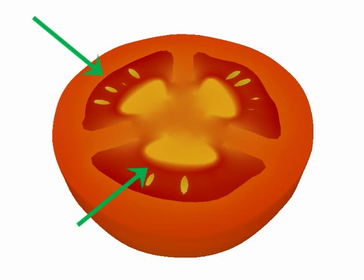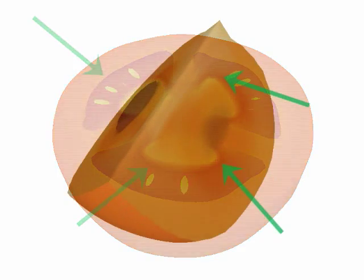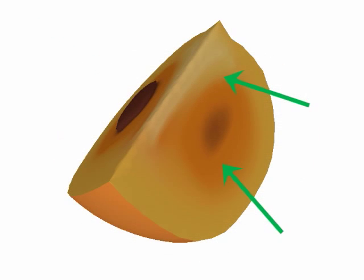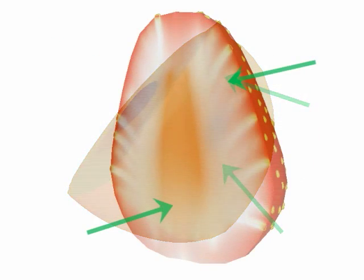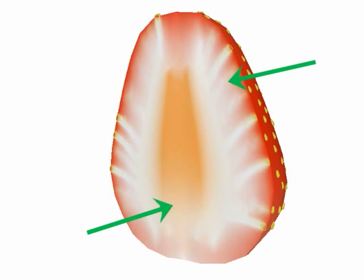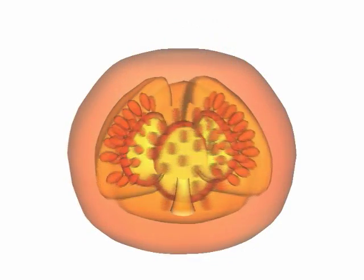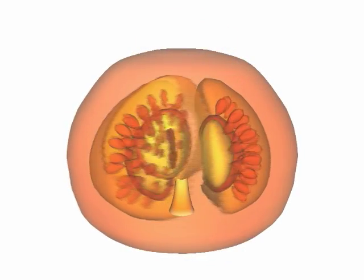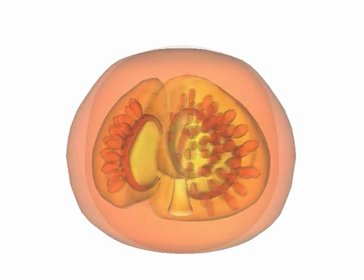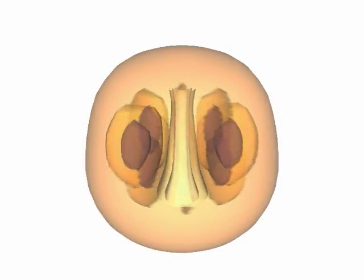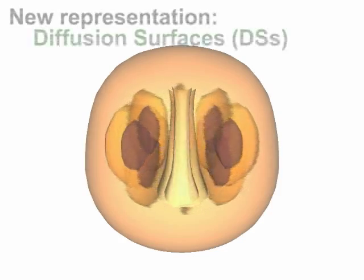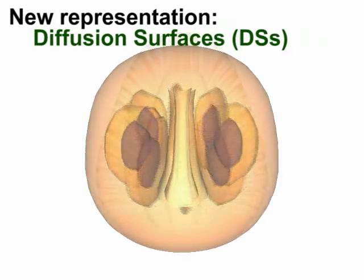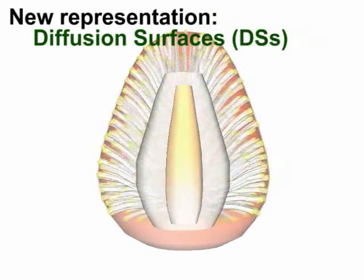The modeling of volumetric objects with distinct structures and smooth and sharp color transitions is still a difficult problem in graphics. In this paper, we introduce a new representation called diffusion surfaces to enable modeling of such objects.